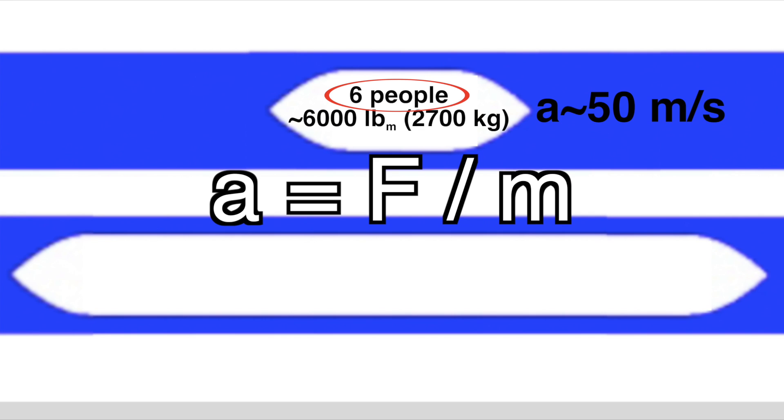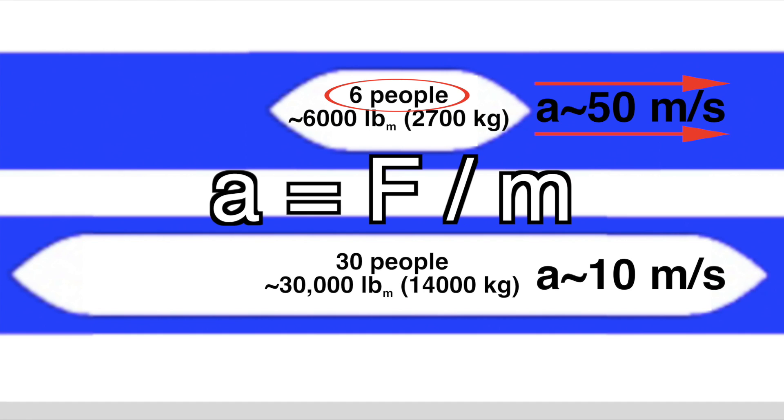A small pod with 6 people would decelerate with about 5 G's, whereas a large pod with 30 people would decelerate with about 1 G.